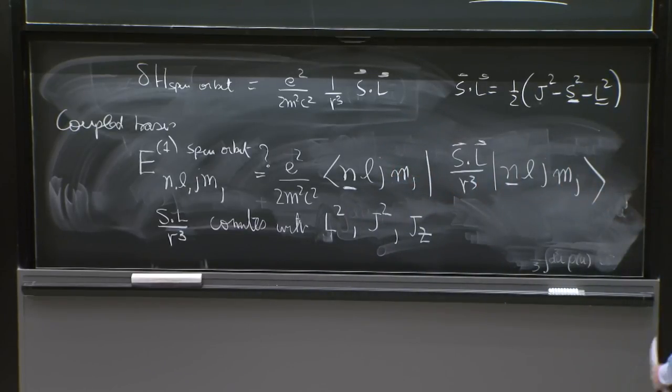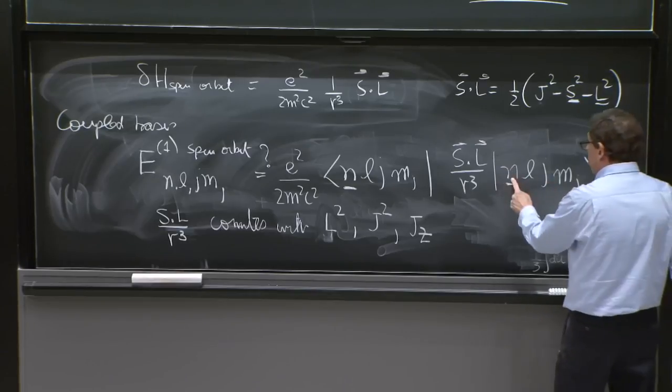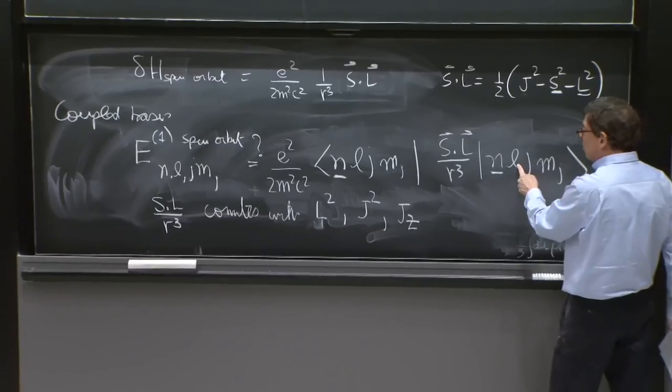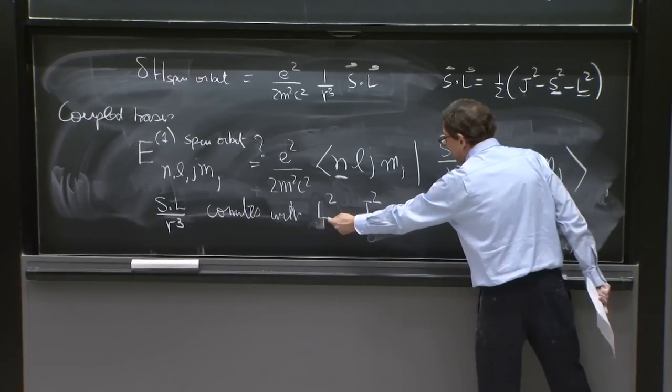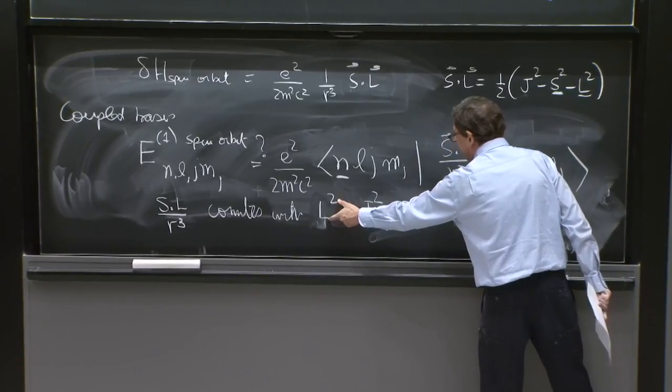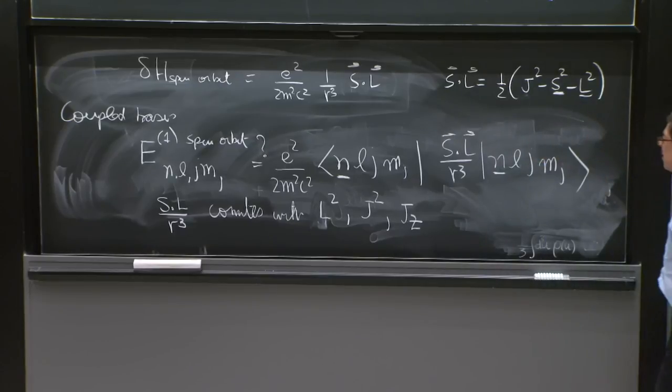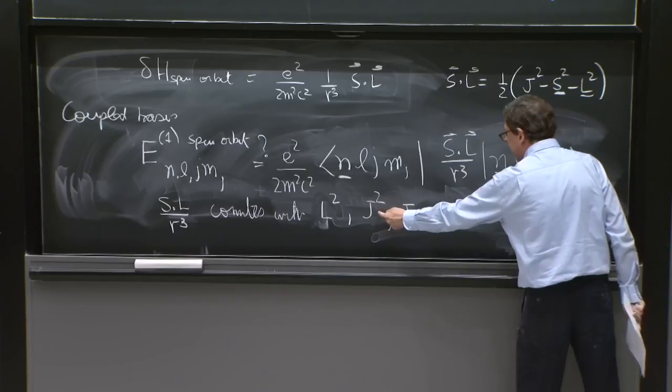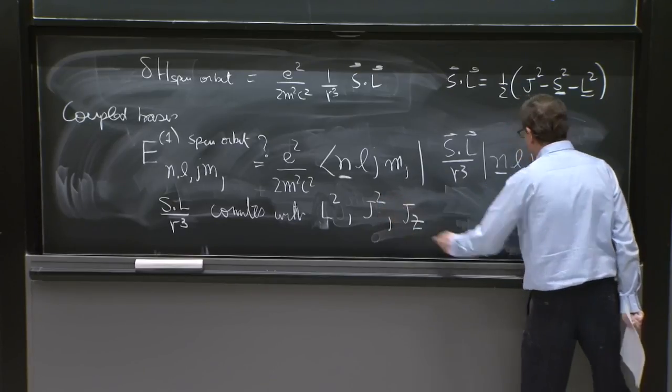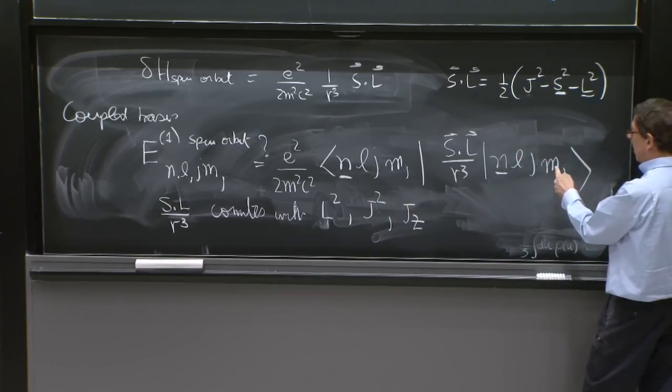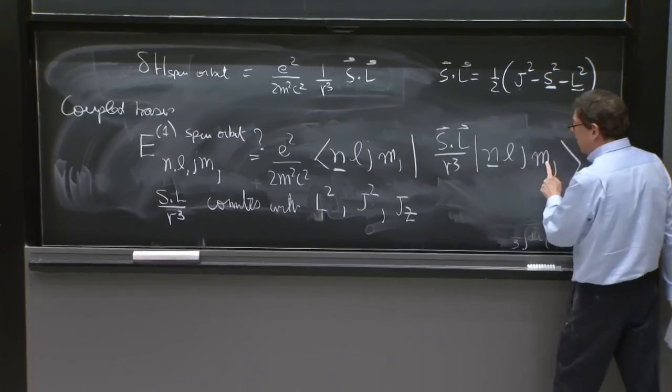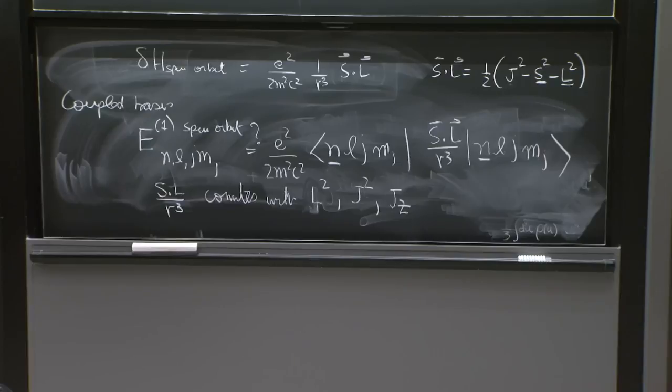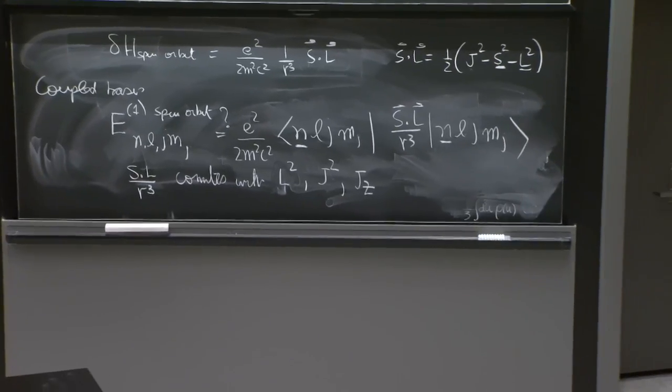You need all that because you can have degeneracies by having different l values, and that would be taken care of by this operator that has different eigenvalues when l is different. You can have degeneracies involving different j values. This would be taken care of by this operator. And you can have degeneracies when m has different values. So that involves the jz operator. So you really need the perturbation that commutes with all of them.